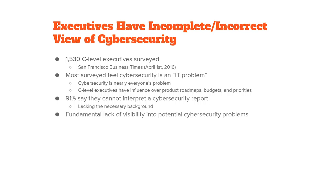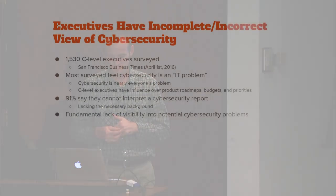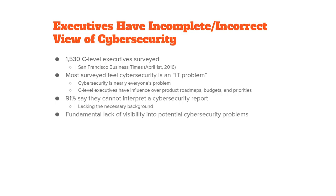Another interesting finding from this survey: 91% of C-level executives say they cannot interpret a cybersecurity report. Not only do they think it's an IT problem, but a large majority don't know the lingo and can't speak cybersecurity talk. This is a two-way problem — IT doesn't know how to present the information in a way executives can understand, and C-level executives also need to understand what's going on in the company. I'm sure Target's C-level executives are now very aware of security and checking in regularly. C-level executives are lacking the necessary background.